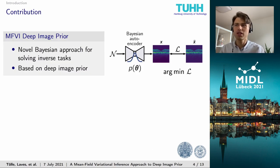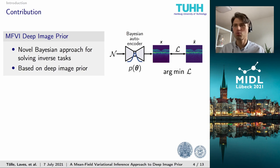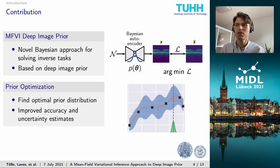In this work, we tackle hallucinations in inverse post-processing tasks by presenting a novel Bayesian approach to the concept of deep image prior. Deep image prior, or DIP for short, uses randomly initialized CNNs as neural representation of the reconstructed image. It is not affected by hallucinations as there is no supervised learning involved. However, DIP is prone to quickly overfit the low-quality image, and we address this by turning it into a Bayesian approach using mean field variational inference. Additionally, we optimize the prior distribution of the CNN weights using Bayesian optimization on a per-task level, showing that this improves reconstruction accuracy and provides well-calibrated pixel-wise uncertainty.